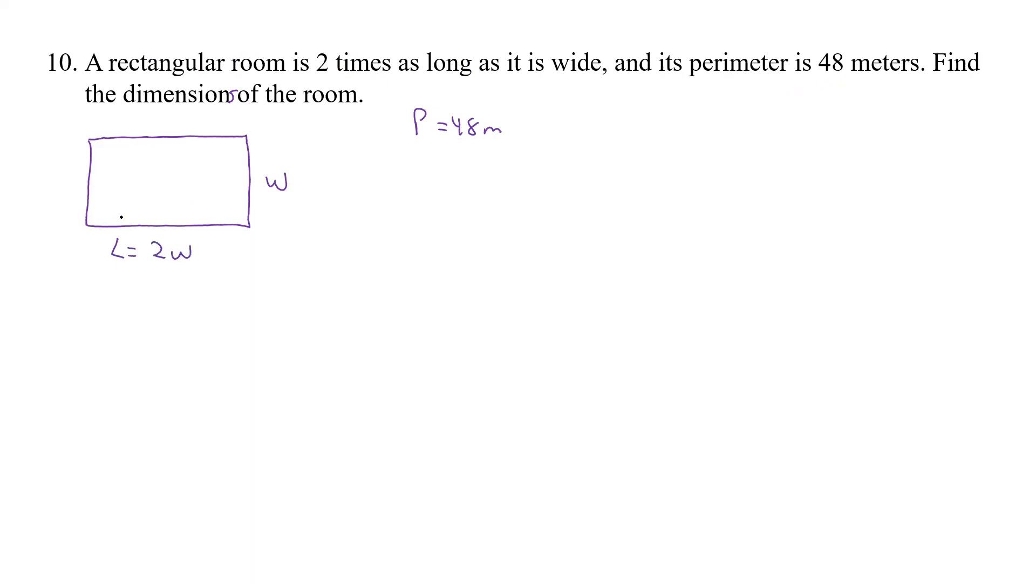And find the dimensions of the room. Let's also say find the area, because that's another problem that we could easily do once we find those two dimensions. So what do we know about perimeter? Perimeter is 2L plus 2W.